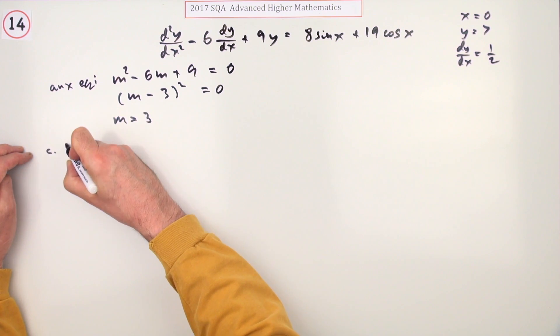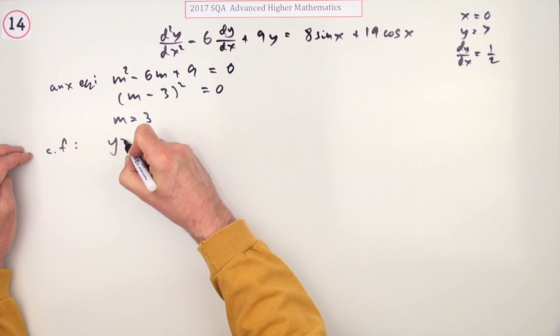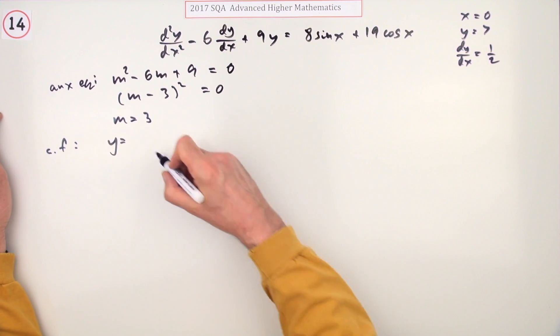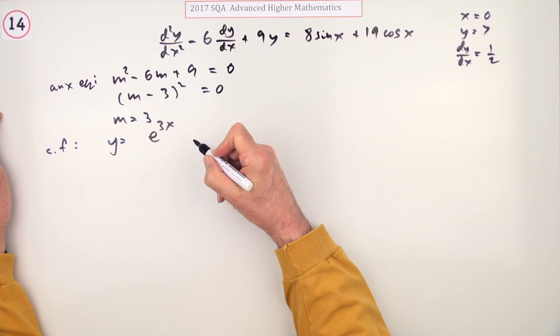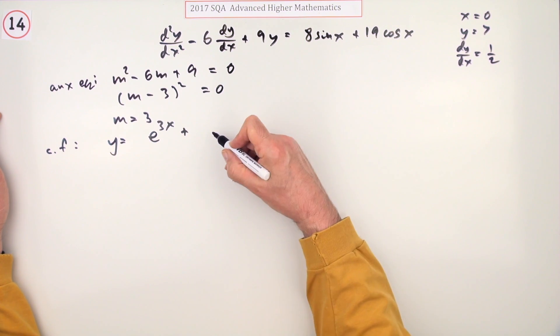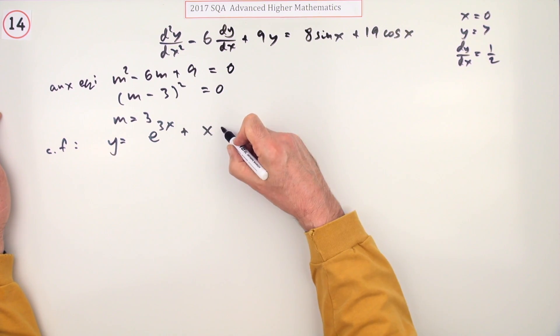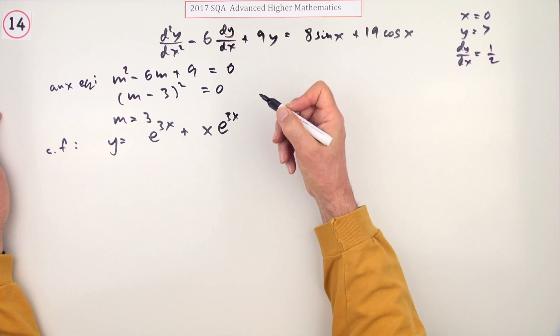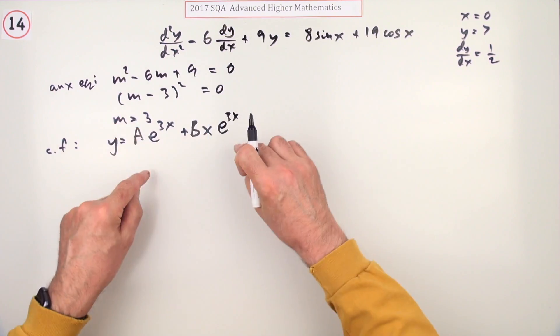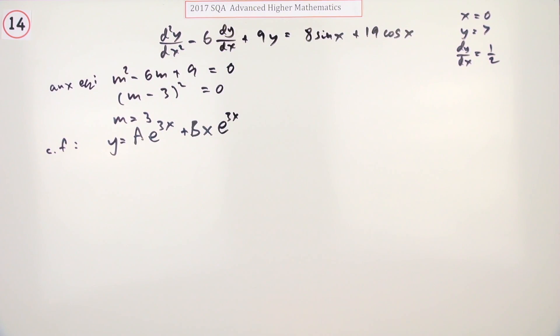When you get the complementary function, which must be made of two bits for a second order one, you can have e to the 3x for one solution, but you can't have e to the 3x again because that's not independent. The second one would be multiplied by x to get an independent solution.